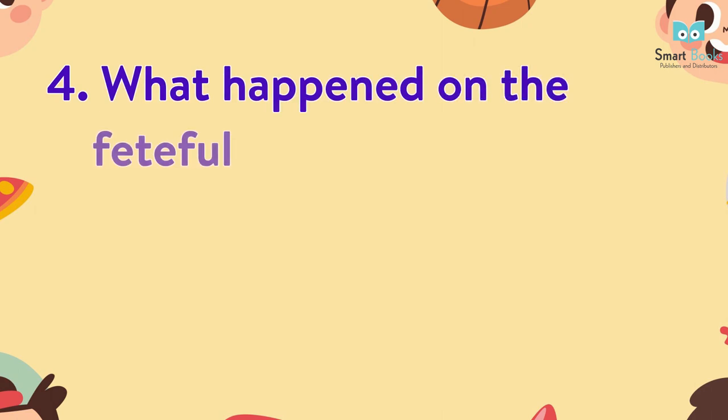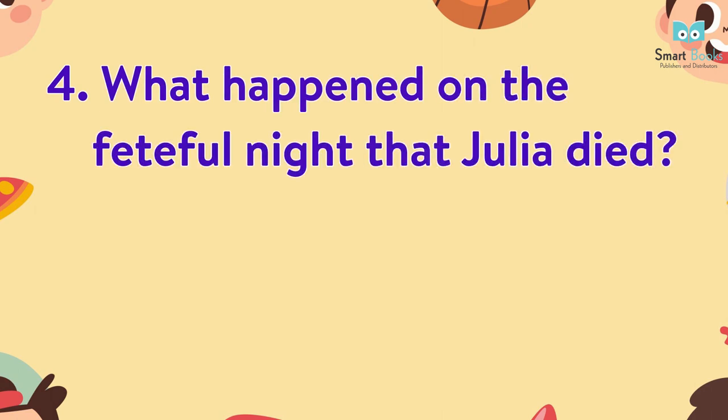4. What happened on the fateful night that Julia died? Julia had gone to her sister's room to talk. She spoke of noises in the night, specifically a whistle that Julia heard in the early morning hours. When Julia went back to her own room, she locked her bedroom door, as did her sister. That evening was described as wild — there was a storm, and Helen heard her sister scream. Julia died in her own room, and the killer left no obvious clues, until Holmes found the motive and the means by which she was killed. As they were silently waiting, suddenly they heard a shrill whistle.